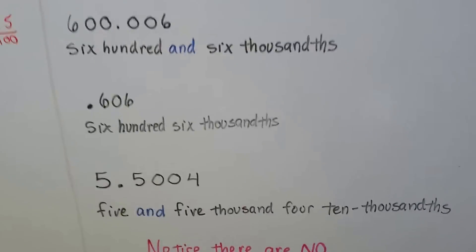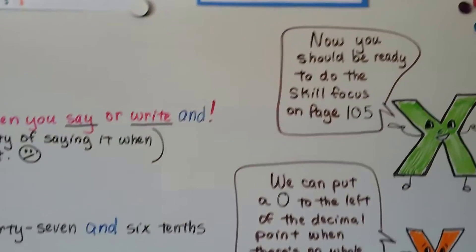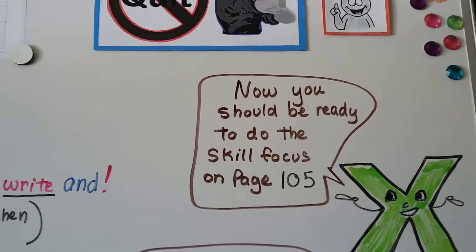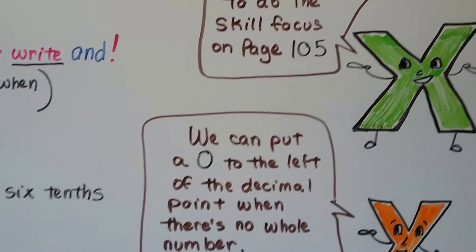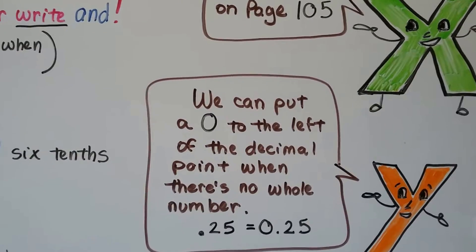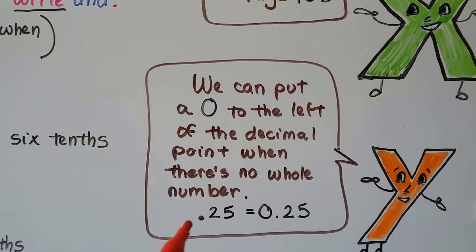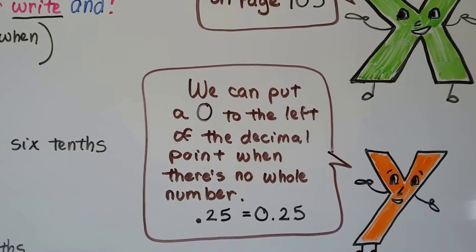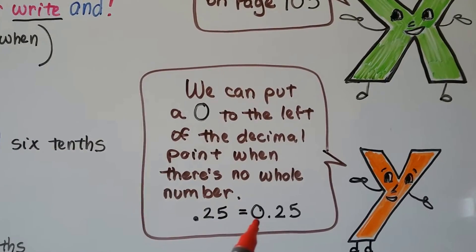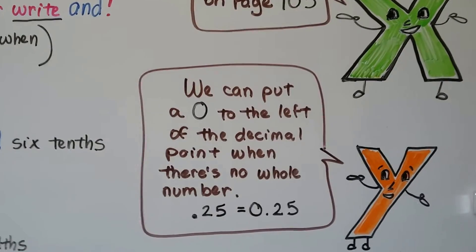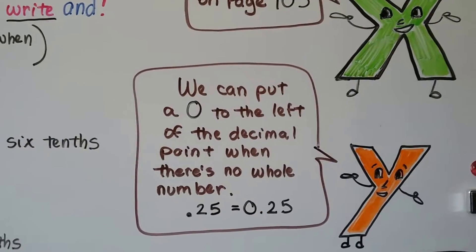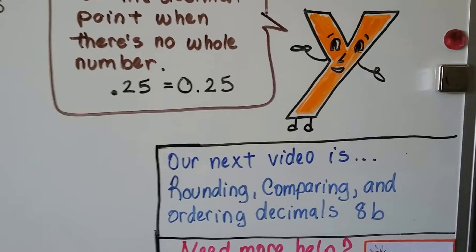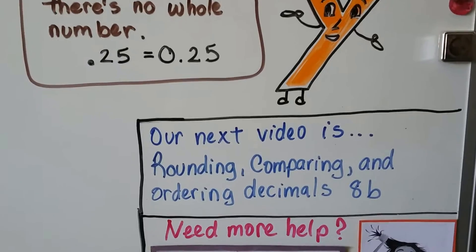I hope this made sense. Now you should be ready to do the skill focus on page 105. We can put a zero to the left of the decimal point when there's no whole number — so if we have 0.25, that's like 25 cents. If you see a zero in your book in front of the decimal point, you can write it or skip it and just write the decimal. Our next video is going to be rounding, comparing, and ordering decimals — Lesson 8b.